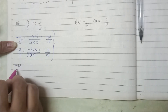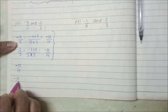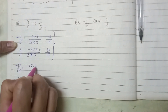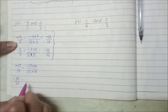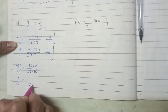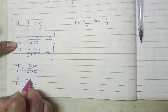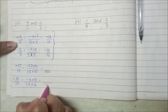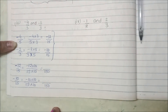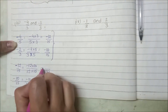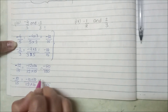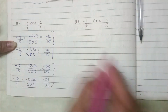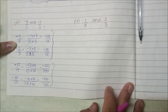We will multiply both fractions by 10 over 10. So what will happen? We get minus 15 times 10 over 150 and minus 10 times 10 over 150. 15 times 10 is 150, and the denominator is the same. Then 12 times 10 is 120, and 10 times 10 is 100. So these numbers give us many numbers between them.